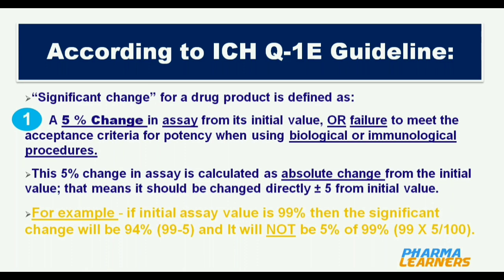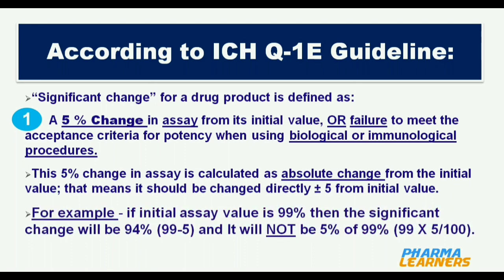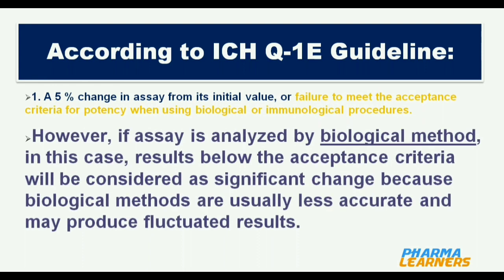That means it should be changed directly plus or minus 5 from the initial value. For example, if the initial assay value is 99%, then the significant change will be 94% (99 minus 5), and it will not be 5% of 99%. However, if assay is analyzed by biological method, any result below the acceptance criteria will be considered as significant change, because biological methods have less accuracy and may produce fluctuated results.